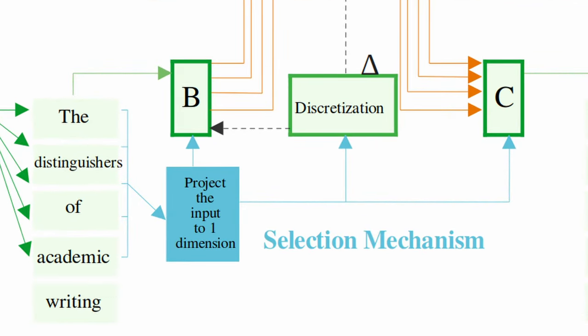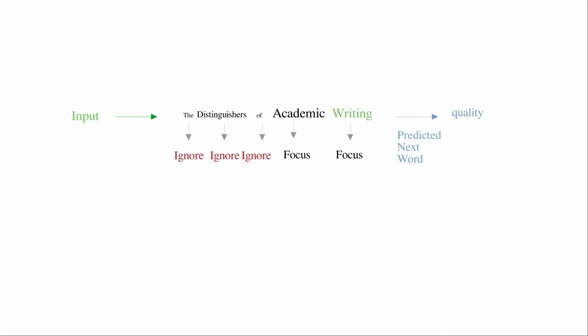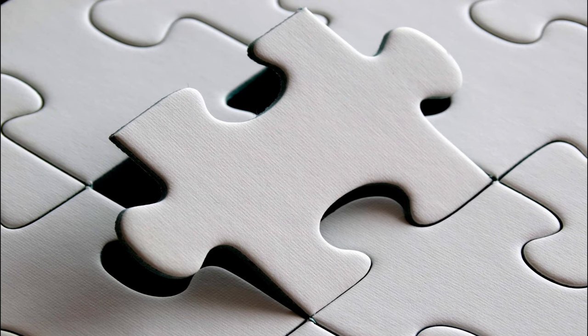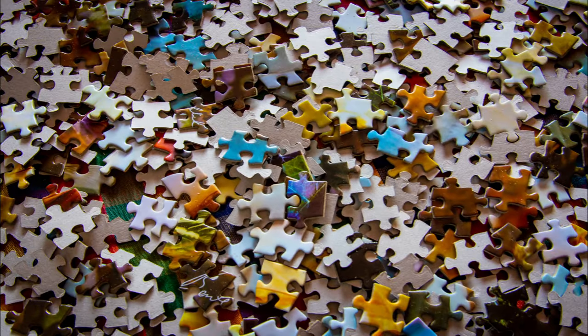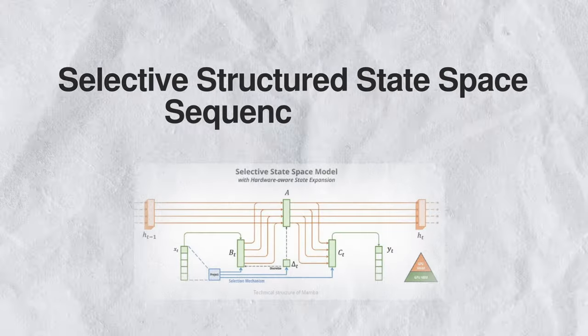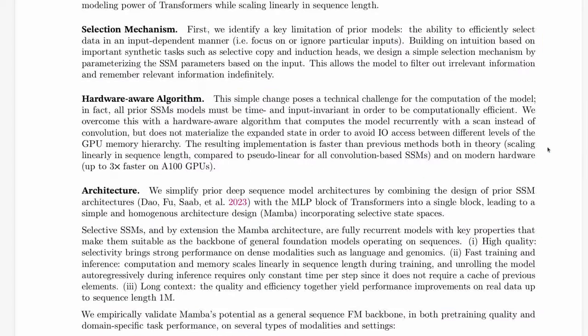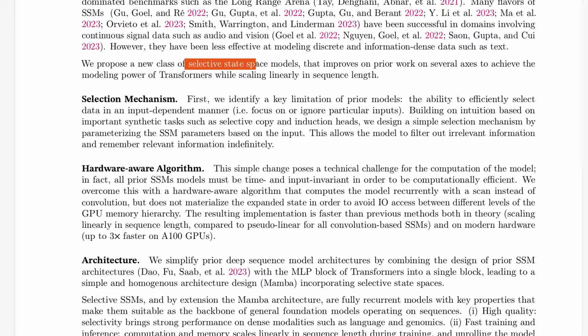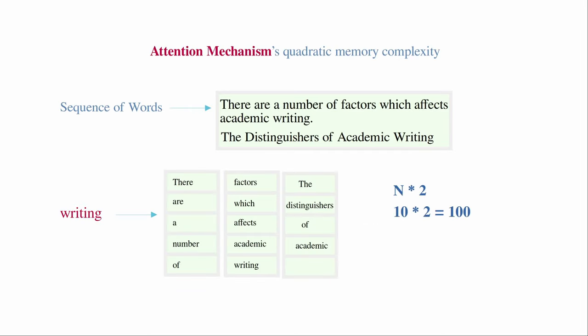It's very selective. It focuses on the most important parts of the data for predicting what comes next. Think of it as zooming in on specific details in the puzzle pieces instead of looking at everything at once. This selective focus not only reduces the computational burden, but also avoids performance degradation with increasing sequence lengths, a significant hurdle for attention-based models.